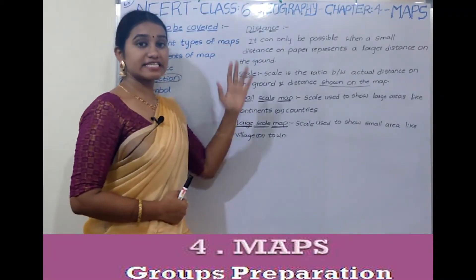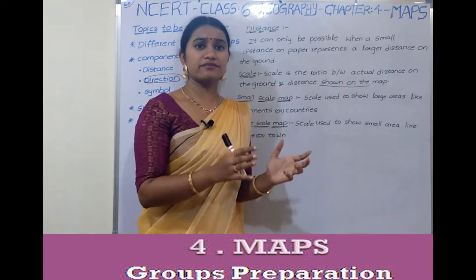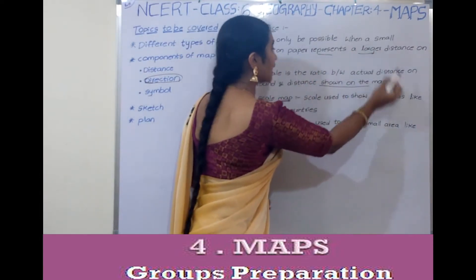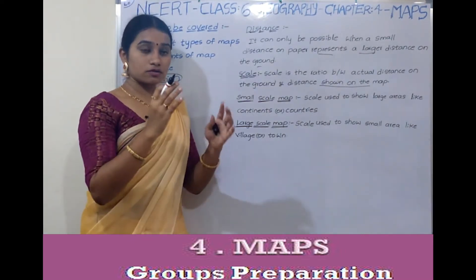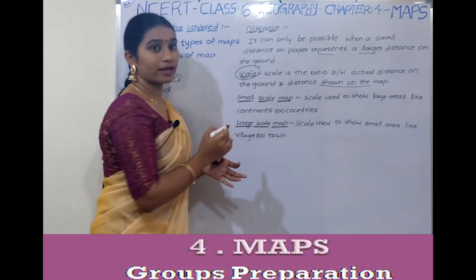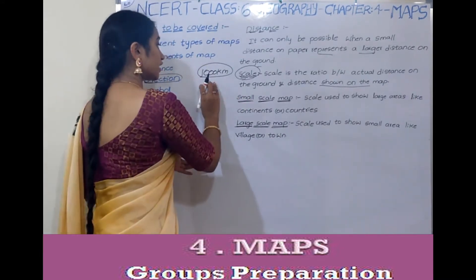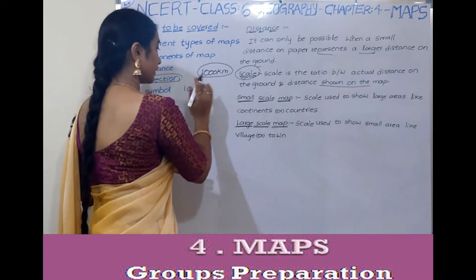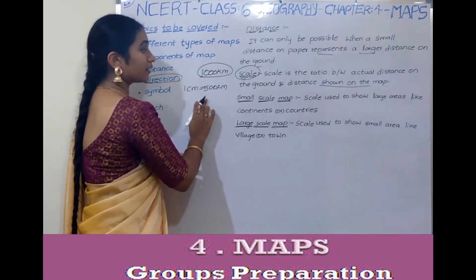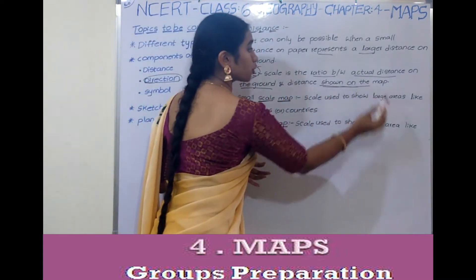The first component of a map is distance. To represent a large country — say 1000 kilometers — on a piece of paper, we need distance. A small distance on paper must represent a large distance on the ground. This is done using scale. Scale is the ratio between the actual distance on the ground and the distance shown on the map.